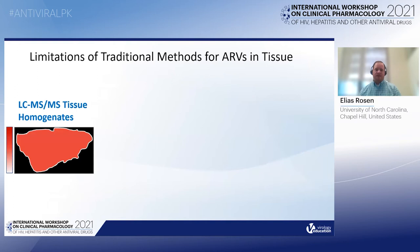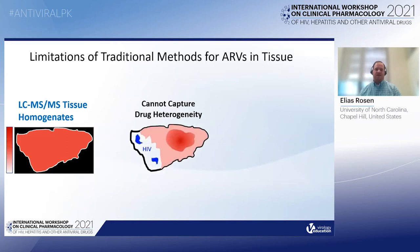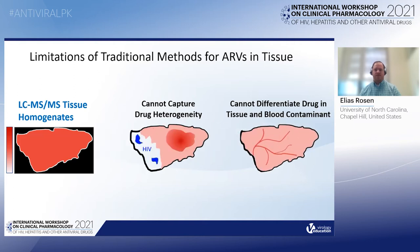In spite of its many attributes, analysis of tissue homogenates by LC-MS-MS does have some limitations, namely that it cannot capture drug heterogeneity or spatial information. While an average concentration within tissue may exceed inhibitory concentrations, there is a possibility that differential accumulation may leave some regions of tissue unprotected by drug. Furthermore, LC-MS-MS concentrations may overestimate the amount of drug in tissue in instances where blood contamination is present in the sample.